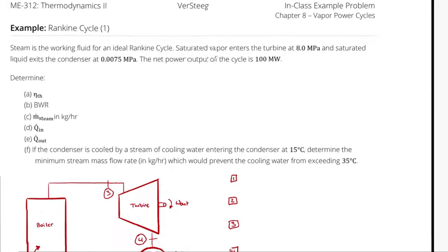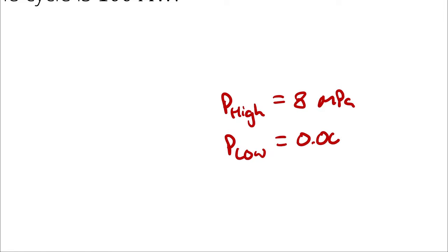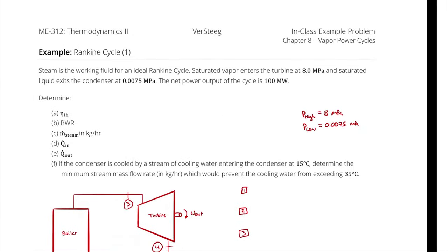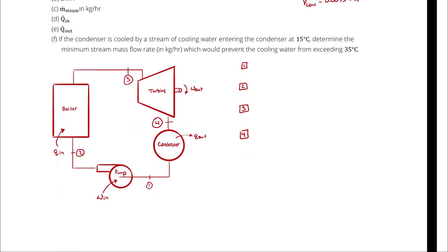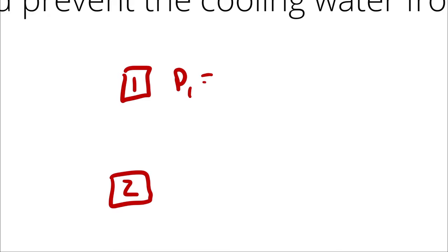So I will identify those pressures. P-high is 8 megapascals. P-low is 0.0075 megapascals. State 1 and 4 are at the low pressure, and states 2 and 3 are at the high pressure.